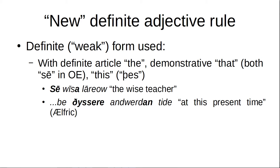Our examples here are Weedan Ríces, which means 'the wise teacher.' Here's another example — this one's with 'this': Bethüssere andwardontide, meaning 'at this present time,' and that's from Alfric. Alfric was late West Saxon, so he had some spellings that I wouldn't use, but that's how he spelled it so I'm not going to change it.